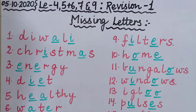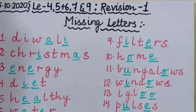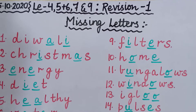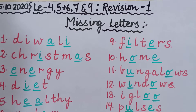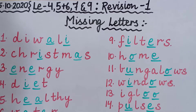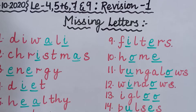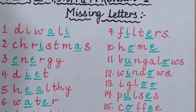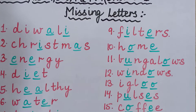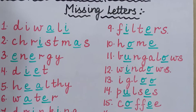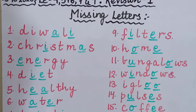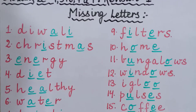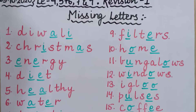So today we are going to do in EVS lesson number 4, 5, 6 which were combined, 7 and 9. We are going to do missing letters and fill in the blanks of all these chapters today. And in my next video we will do other 2-3 exercises, so in this way we will complete our revisions and combine all our chapters.